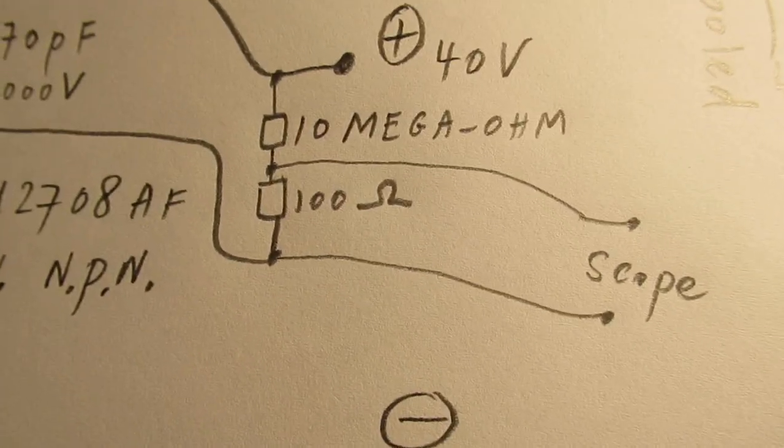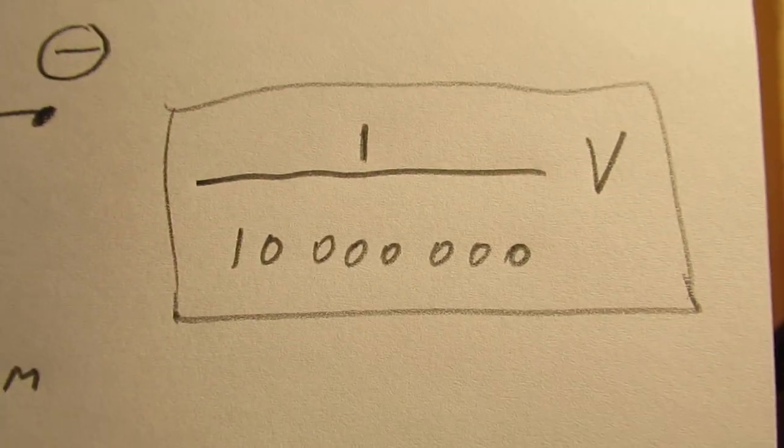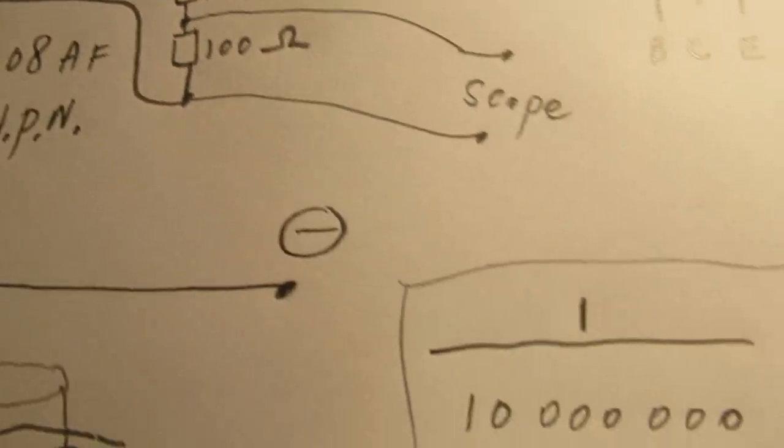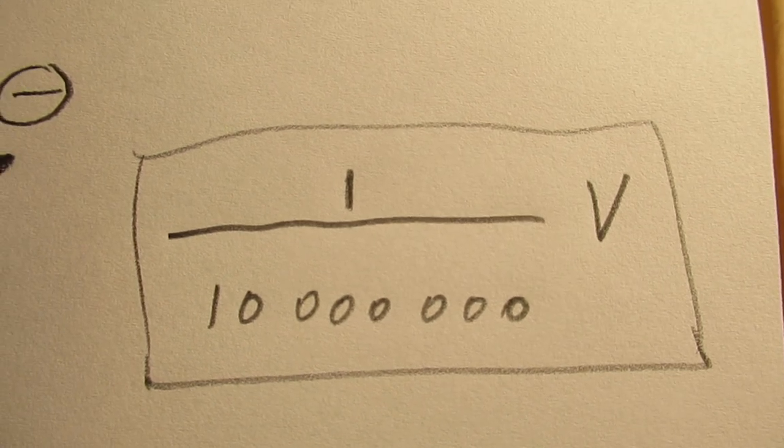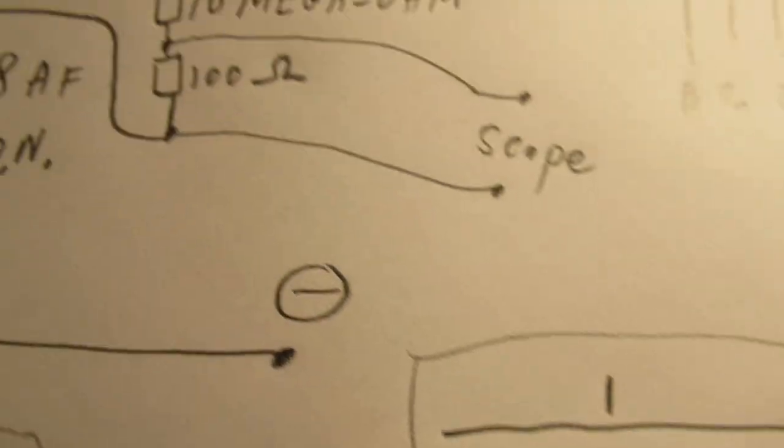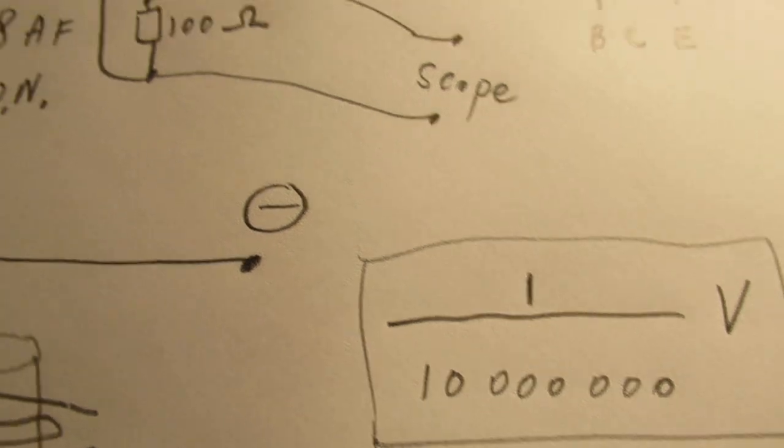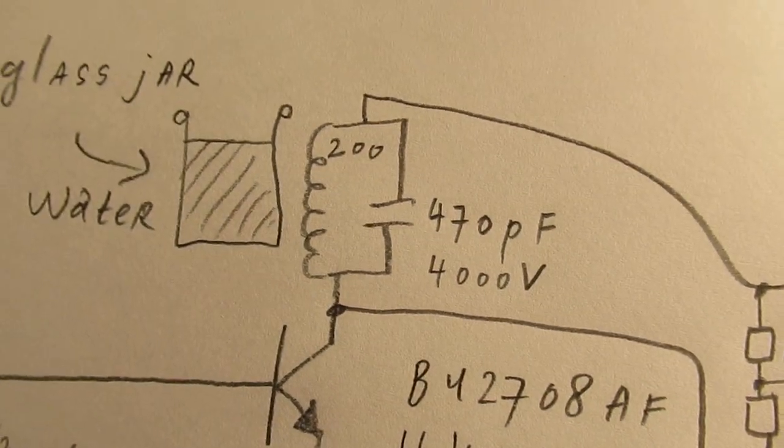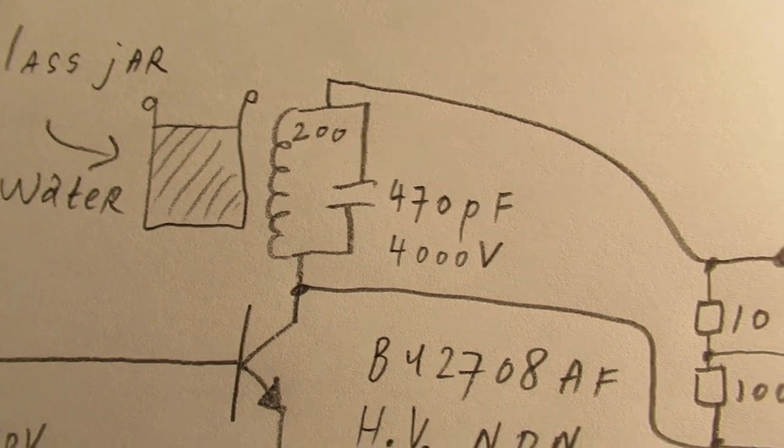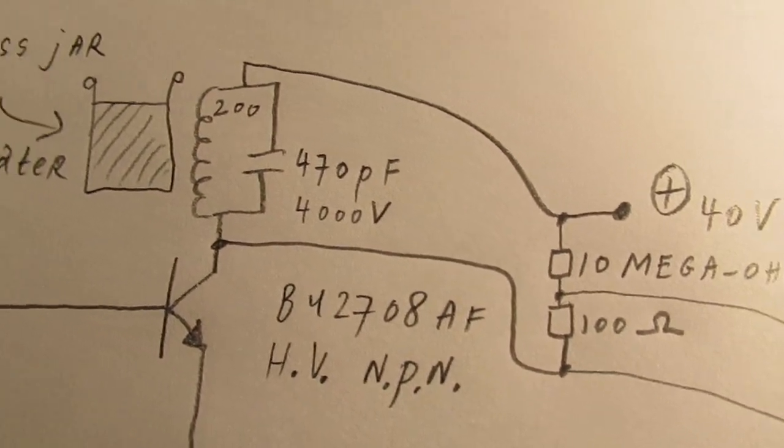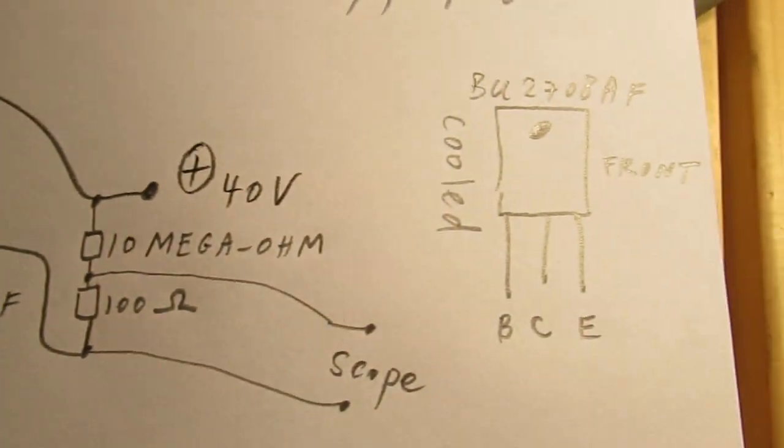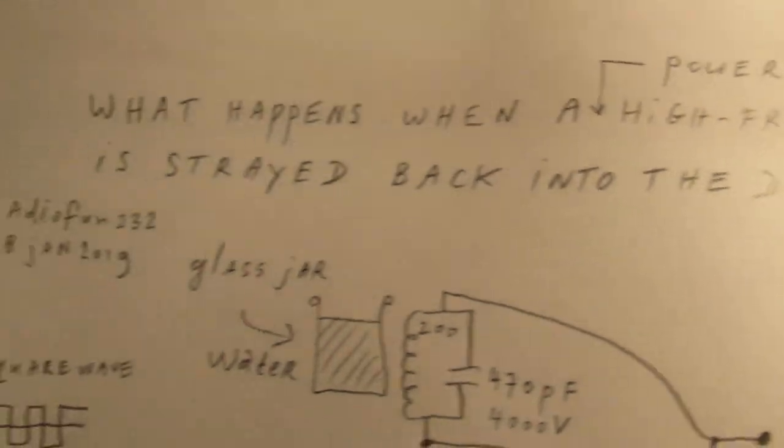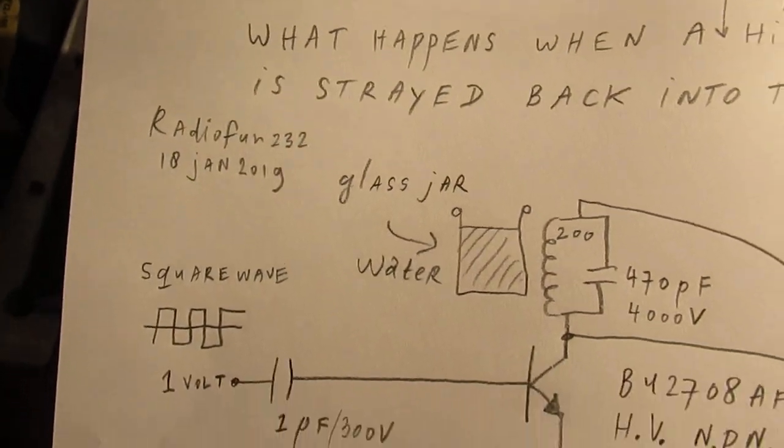We send into the oscilloscope entrance one ten-millionth of the high voltage that's generated inside the tank circuit. Be careful, never connect your oscilloscope to a high voltage coil. It will be dead within a fraction of time.